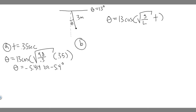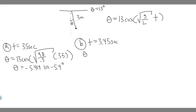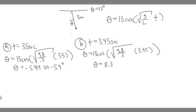For part b, t equals 3.45 seconds. It's the same formula — the only thing that changes is the time. So theta equals 13 times the cosine of the square root of 9.8 divided by 0.3, multiplied by 3.45. When you do that, you get theta equals 8.39, which you can round to 8.4 degrees.